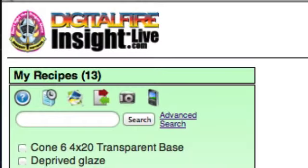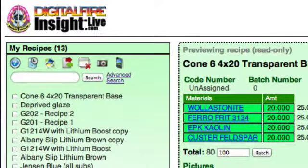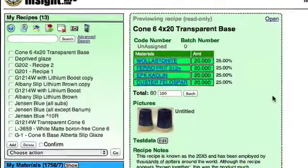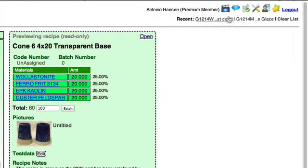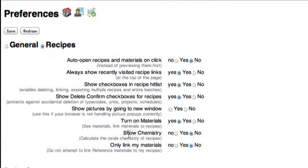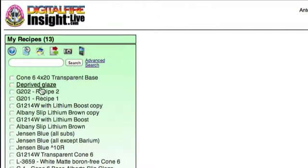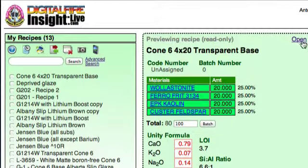I'm logged into Insight Live right now and I want to demonstrate how we can look at the chemistry of a glaze recipe to tell if it's balanced. I've just clicked on a recipe here. Now I'm not seeing the chemistry, so I'm going to click on preferences and choose show chemistry, save, go back home. Now we'll click on that again and now it's showing the chemistry.